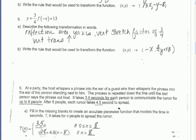Number 6 is about a rumor spreading at a party. It says it takes 3.5 seconds for each person to spread the rumor for the first 8 people. After that, it takes 4.5 seconds per person to spread it. So we can see there's two parts to this piecewise function. First, for n is going to be the number of people, so from 0 people up to 8, and then for more than 8 people.